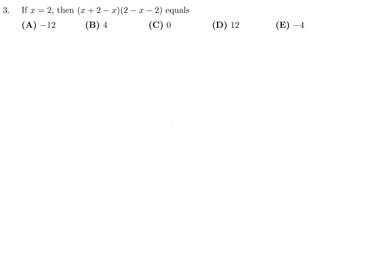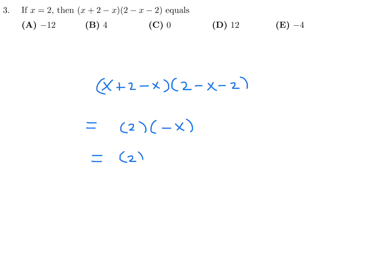Question 3: If x equals 2, then (x + 2)(x − 2) − x(2 − x) equals. The first factor has x cancelled, and in the second, the 2 is cancelled, so all you're left with is 2 times negative x. Substituting x equals positive 2, it becomes negative 2, giving you negative 4. So number 3, the answer is E.